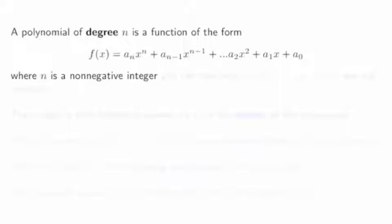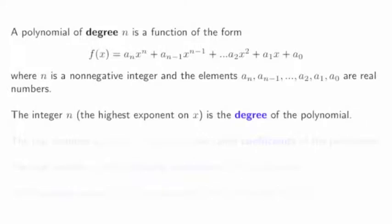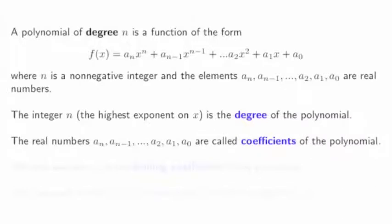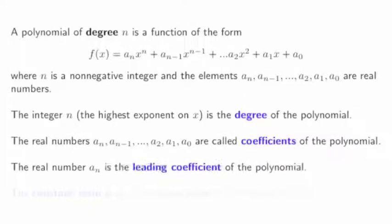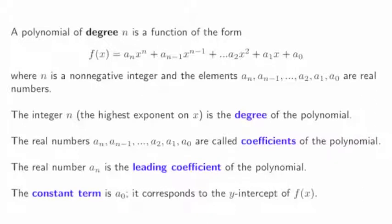Where n is a non-negative integer, and the coefficients a_n and so on are all real numbers. The integer n, the highest exponent on x, is the degree of the polynomial, and the real numbers in front of the powers of x are called the coefficients. The real number a_n at the front is the leading coefficient, and the constant term a_0 corresponds to the y-intercept of f(x).